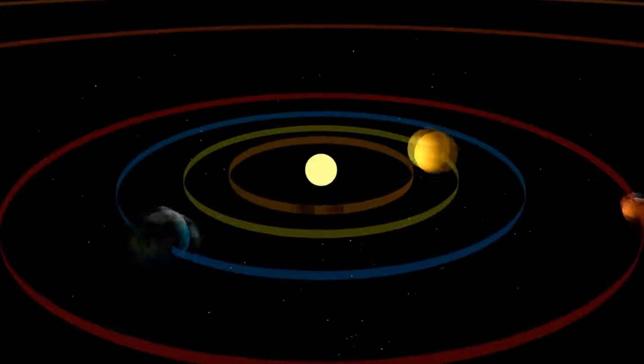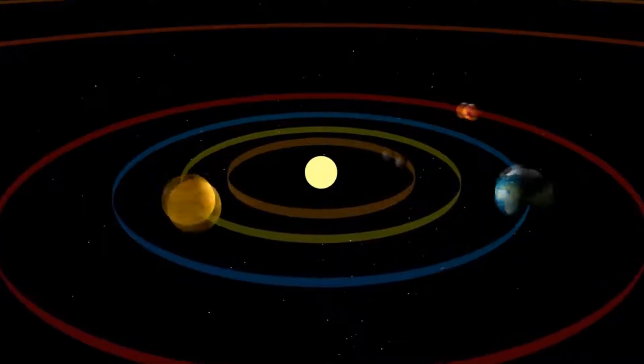So why do the planets not fall into the Sun? Because they keep moving. They just keep on moving and moving. Now watch this. The ball of paper fell because it stopped moving. It lost momentum and stopped moving, so it fell.